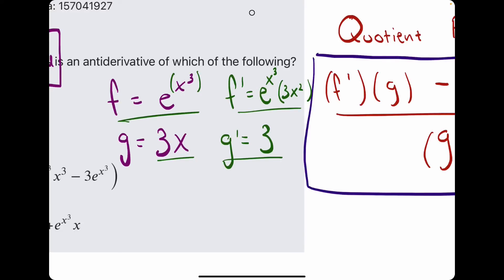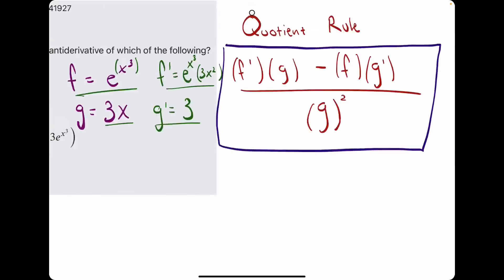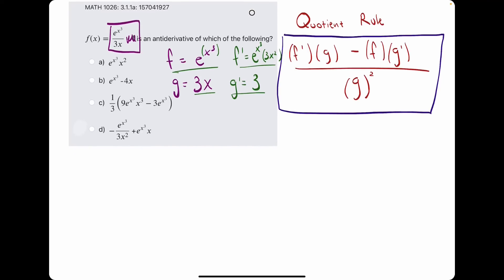So, we have f, f prime, g, g prime, and we will just plug them in to the quotient rule. Starting with f prime, we have e to the x cubed times 3x squared minus f, which is e to the x cubed, times g prime, which is 3.